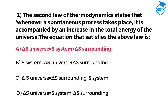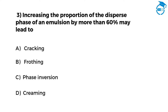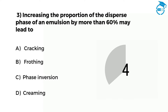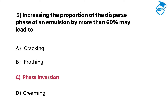The next question is: increasing the proportion of the dispersed phase of an emulsion by more than 60% may lead to — option A cracking, option B frothing, option C phase inversion, option D creaming. Write your answer in the comments. You have got 7 seconds. The right option is C, that is phase inversion.